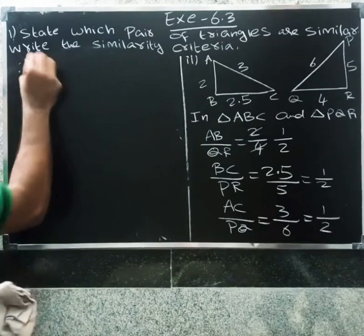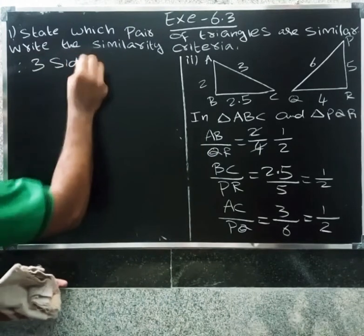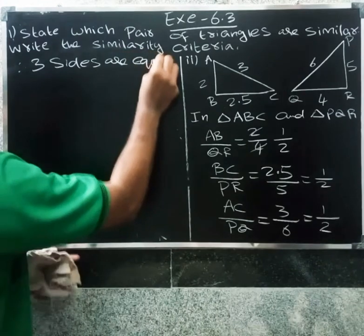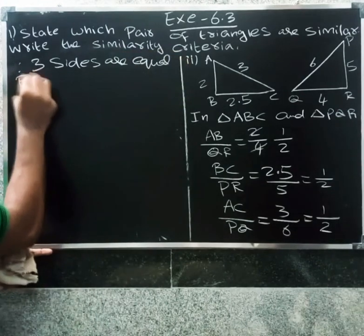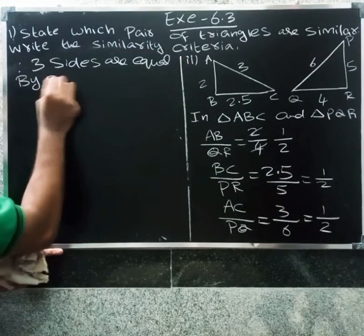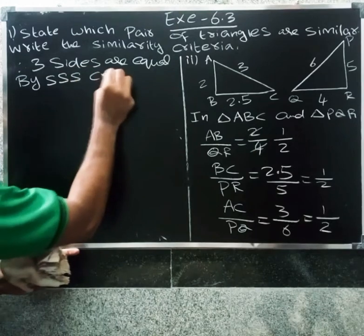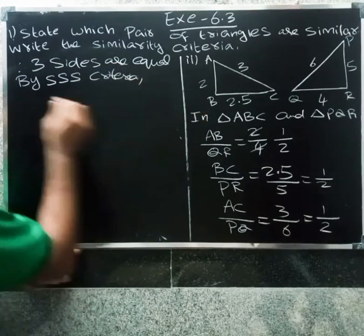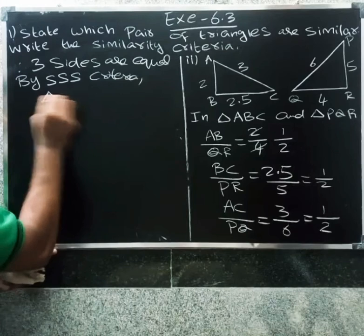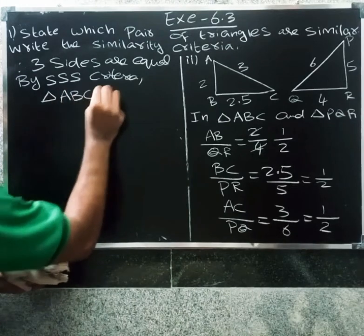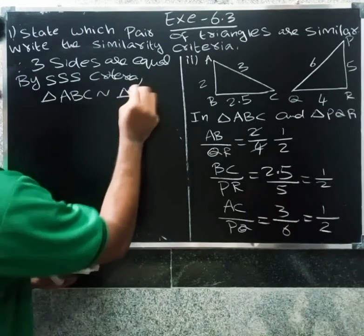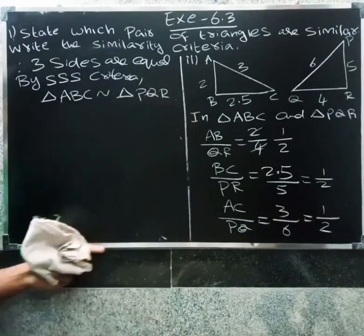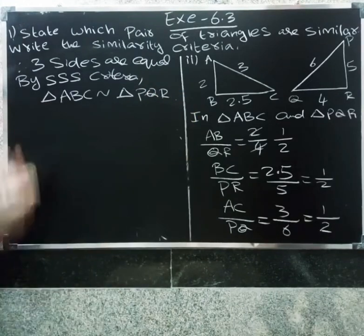Three sides are equal. By Triple S (SSS) similarity theorem, triangle ABC is similar to triangle PQR.